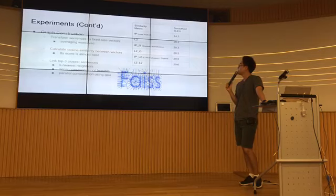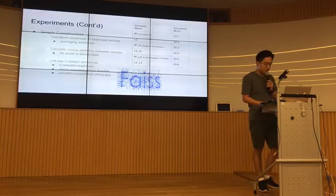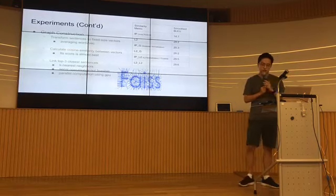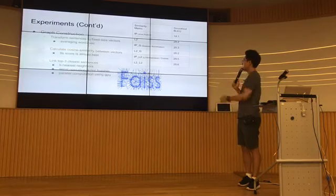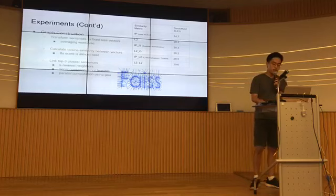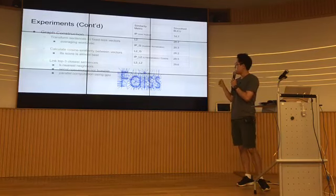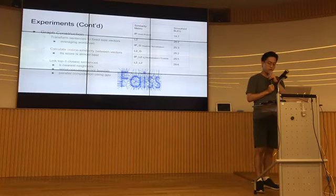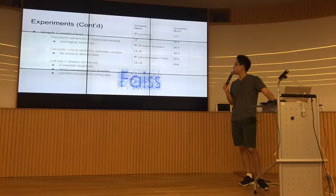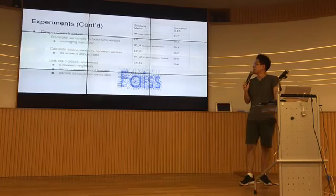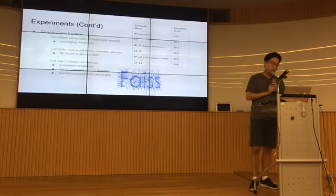That's the result in the table. First IP is inner product distance, L2, G means Gaussian normalization, L2 dash means L2 normalization. Second from the bottom one is cosine similarity metric. Its score is almost best, so I used cosine similarity because cosine similarity metric is known to be very useful in NLP.